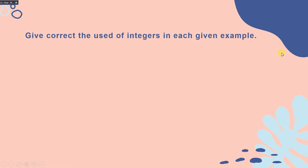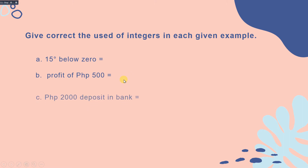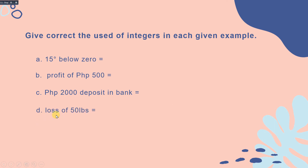Let's practice using integers in real-life examples. 15 degrees below 0 is negative 15, because below 0 is negative. A profit of 500 would be positive 500. A deposit of 2,000 pesos added to your savings account is positive, so that would be positive 3,000. A loss of 50 pounds of weight indicates negative, so that would be negative 50.